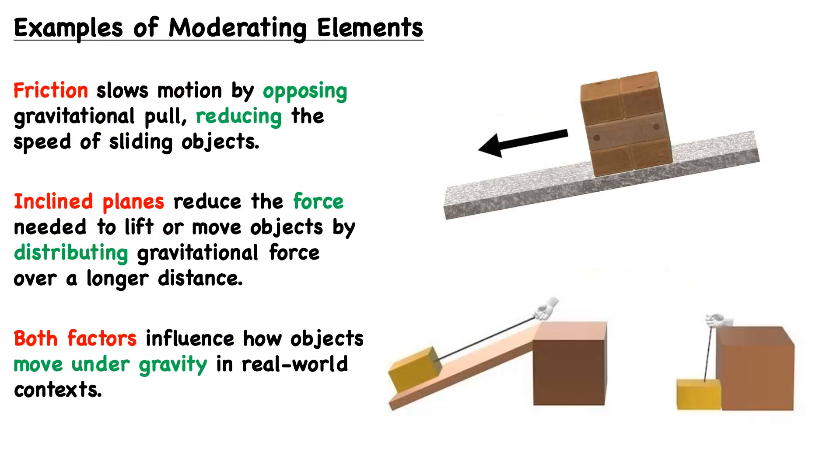Now let's take a look at a few examples of moderating elements. By moderating elements, we essentially mean factors that will influence the motion of objects under gravitational force. One example is friction, which slows motion by opposing gravitational pull, reducing the speed of sliding objects.